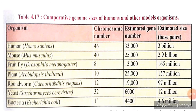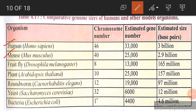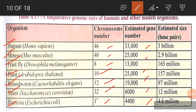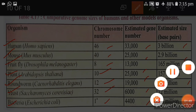A comparative genome size chart shows human and other organisms. Humans have 46 chromosomes, mouse has 40, fruit fly (Drosophila) has 8, Arabidopsis (a plant) has 10, roundworm has 12, and yeast has 32 chromosomes. Each organism has a different estimated gene number and estimated genome size in base pairs.